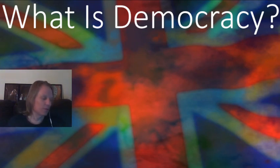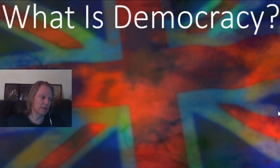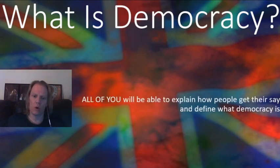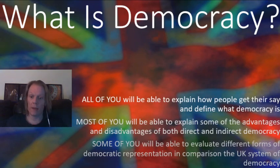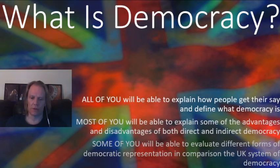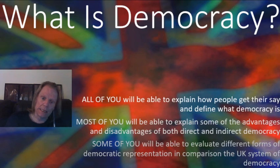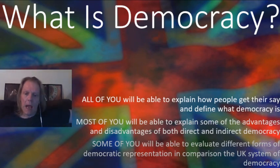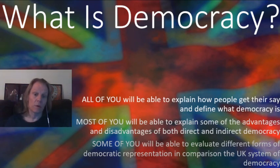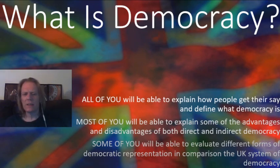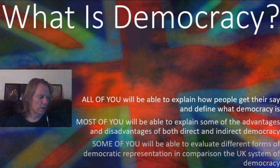Hopefully you will find these lessons helpful and enjoyable. So what are we actually looking at? We're asking the question: what is democracy? In order to answer that, we're going to hopefully all be able to explain how people get their say in our world and in our society, and be able to give a definition of what democracy is, what the word means, and what the principle of a democratic society really means. Most of you will also be able to explain some of the advantages and disadvantages of different forms of democracy — we will look at two in particular: direct and indirect democracy. And some of you will also be able to evaluate different forms of democratic representation within the UK system of democracy — how it works with all the nuts and bolts.